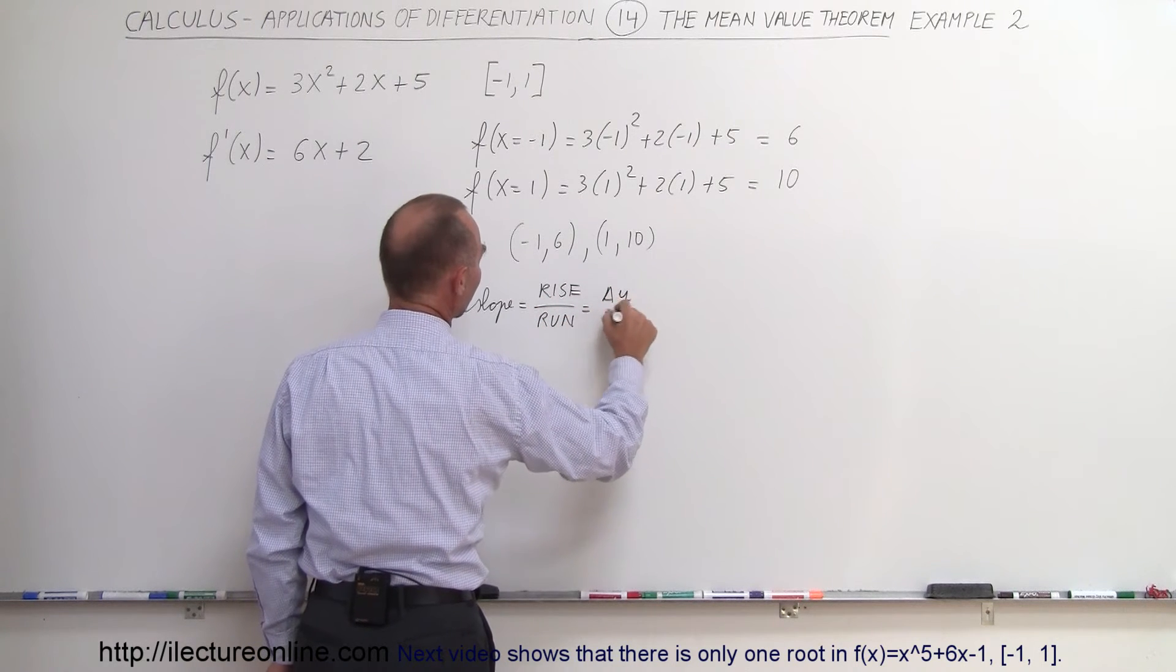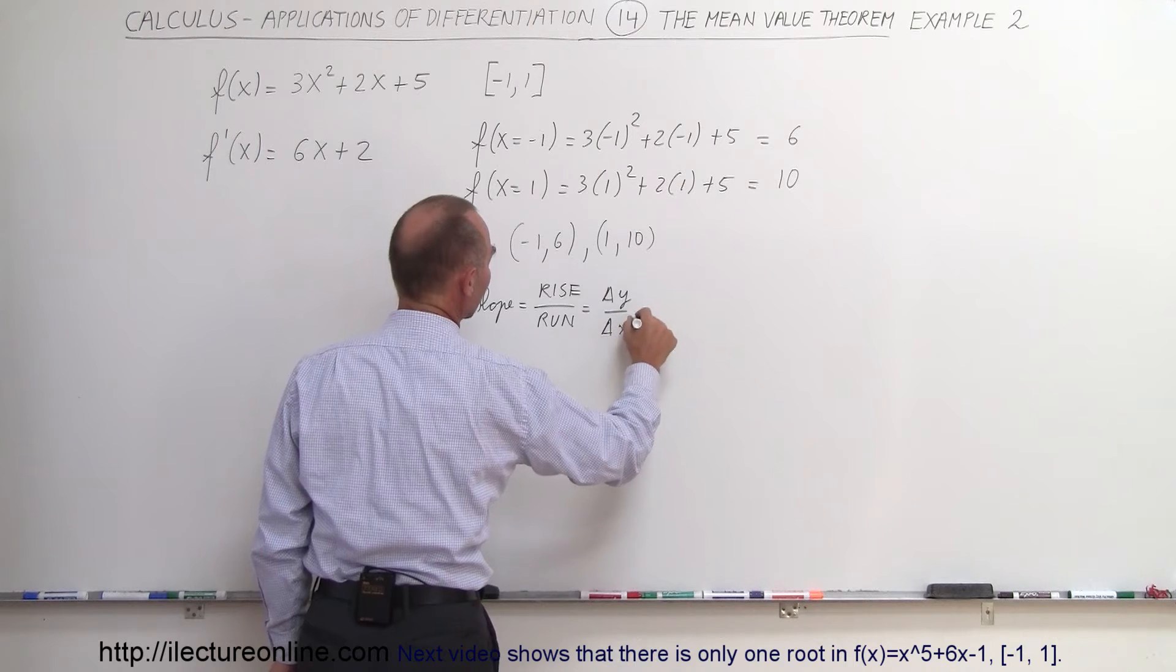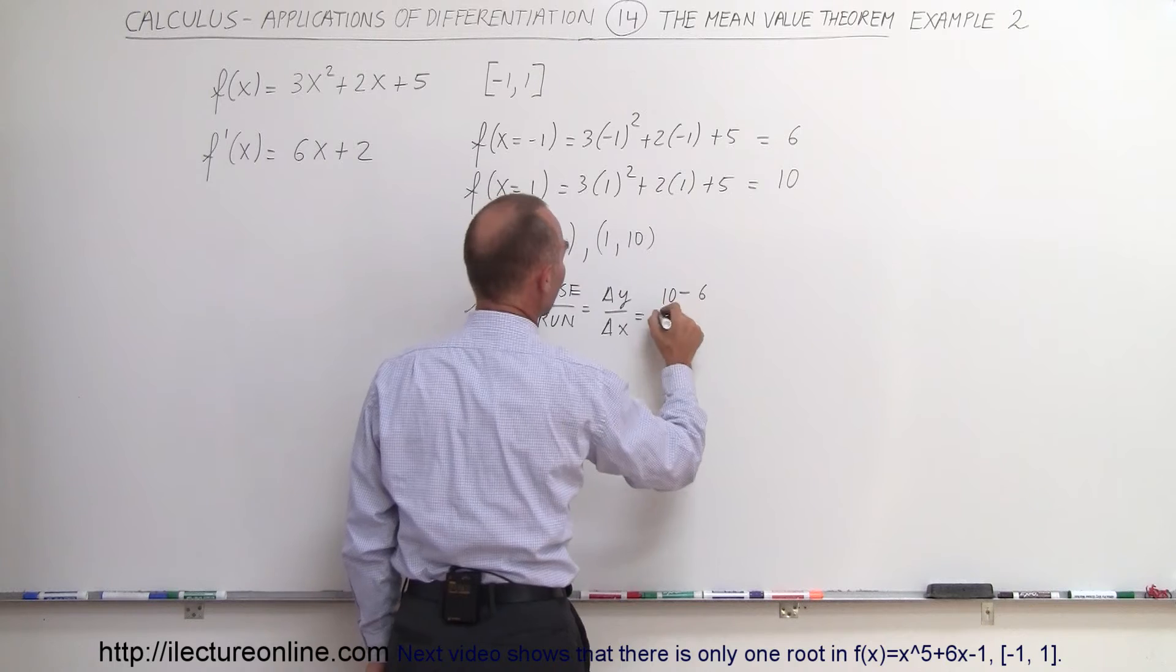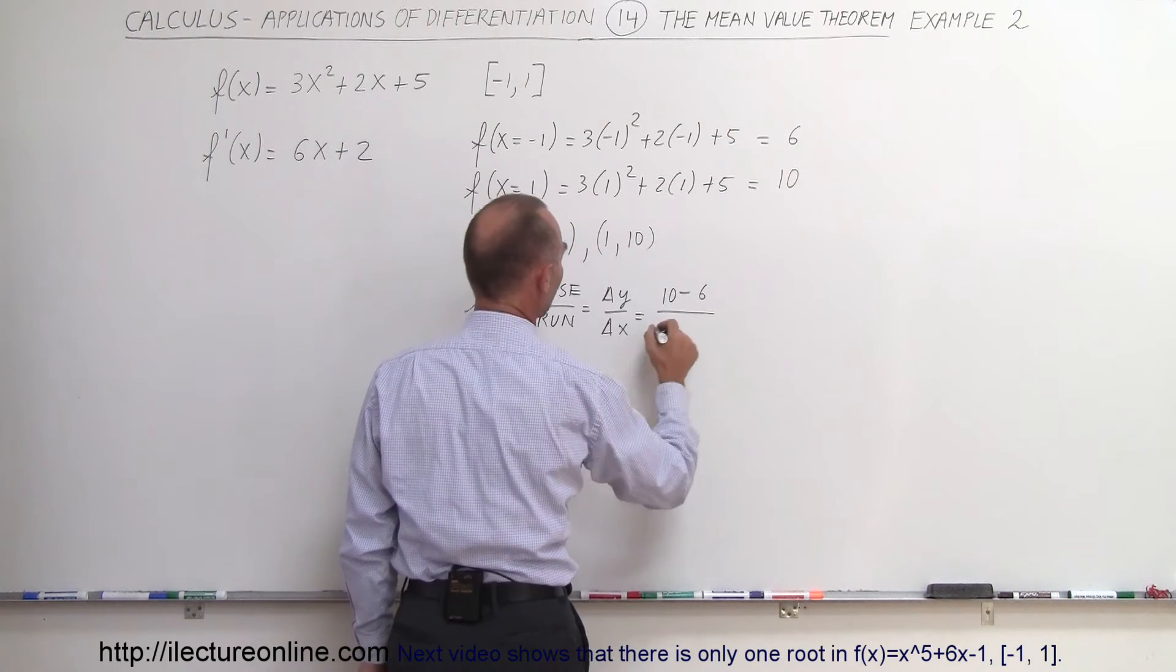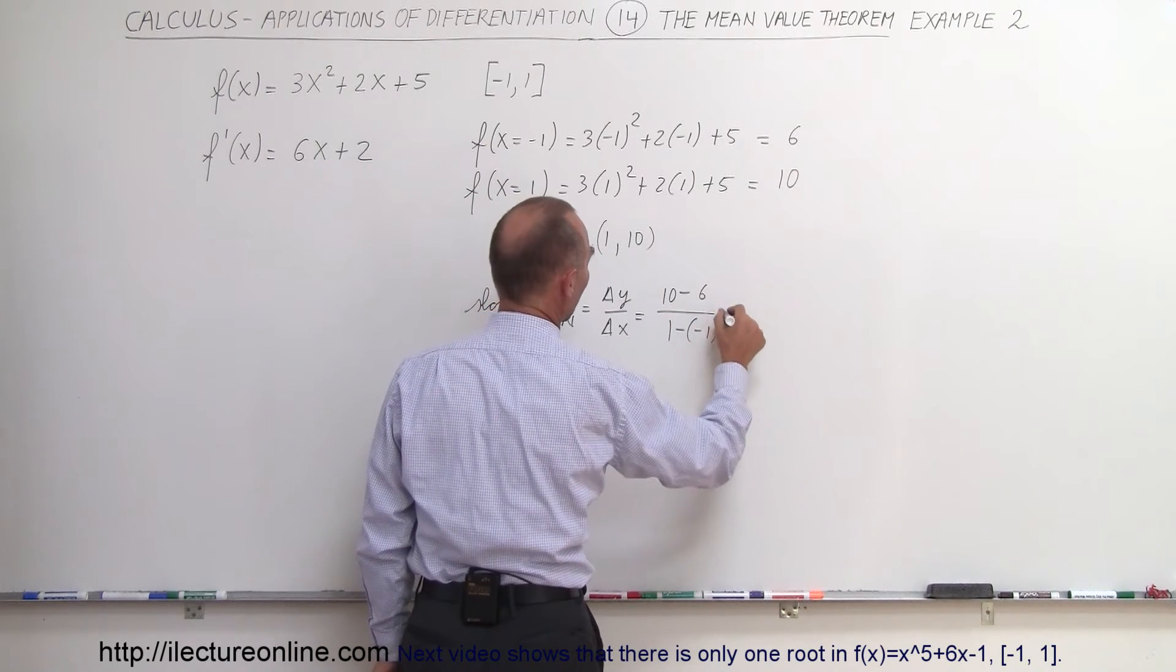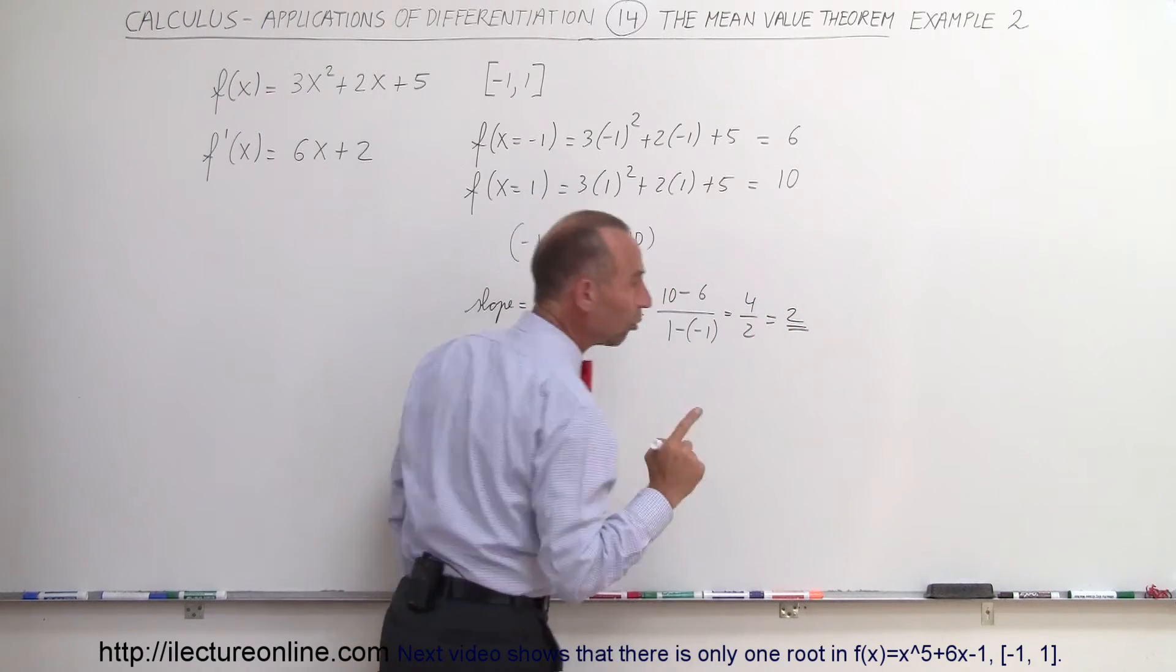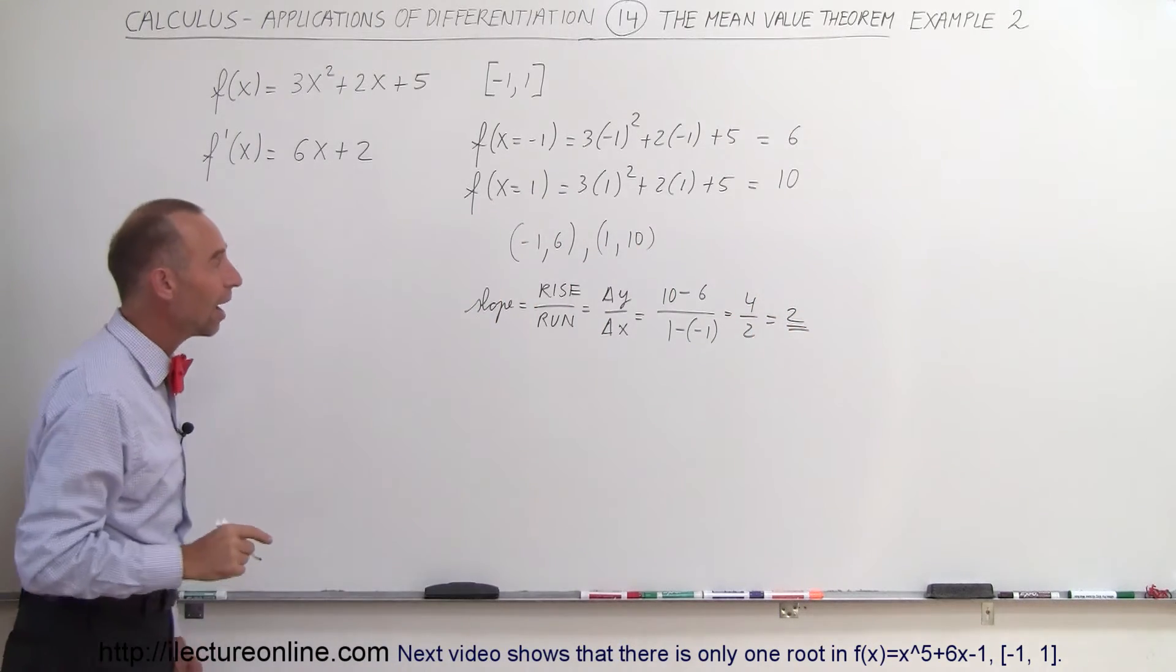the change in the y values divided by the change in the x values. And the change in the y values would be 10 minus 6, divided by 1 minus negative 1. So it would be 4 divided by 2, which is 2. So that's the slope between the two points on the graph.